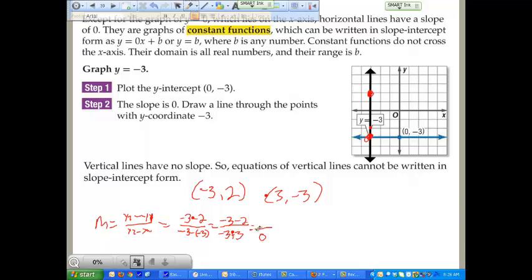Negative 3 minus a negative 3, that's the same thing as saying negative 3 plus 3, which equals 0. So you'd end up with negative 5 over 0. Any time you have a fraction where you have a numerator over 0, your answer is always undefined. And that is why vertical lines have no slope. They have no slope because you cannot write a fraction in the form of a natural number over 0.